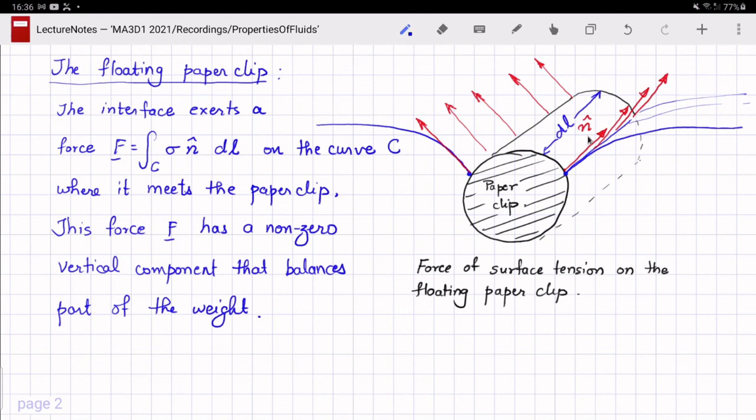And because of the depression of the water surface, you will see that n hat has a vertical component. And therefore when you calculate the force because of the interface on its boundary, sigma is a constant so it comes out of the integral. And the integral of n hat everywhere has a vertical component which adds up to give an additional force on the paper clip that helps it float even though it's heavier than water.